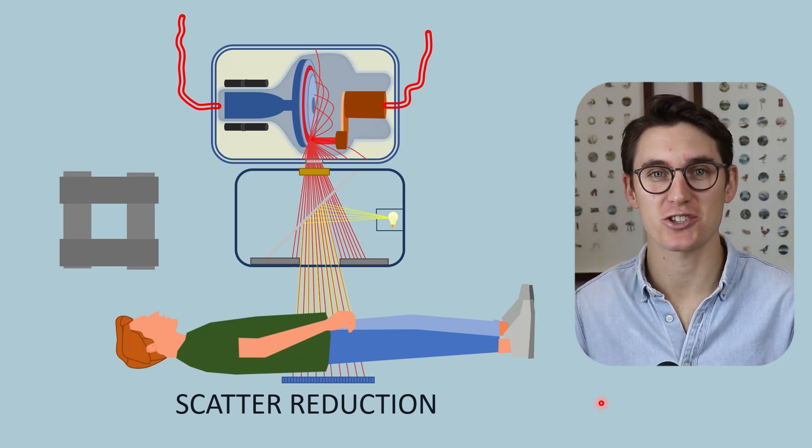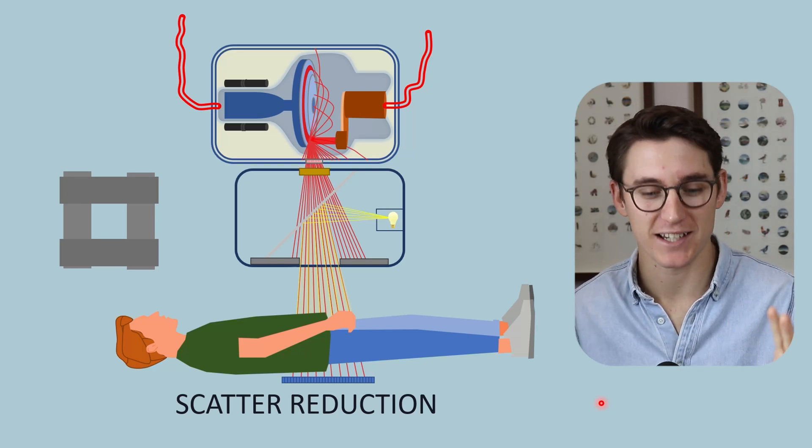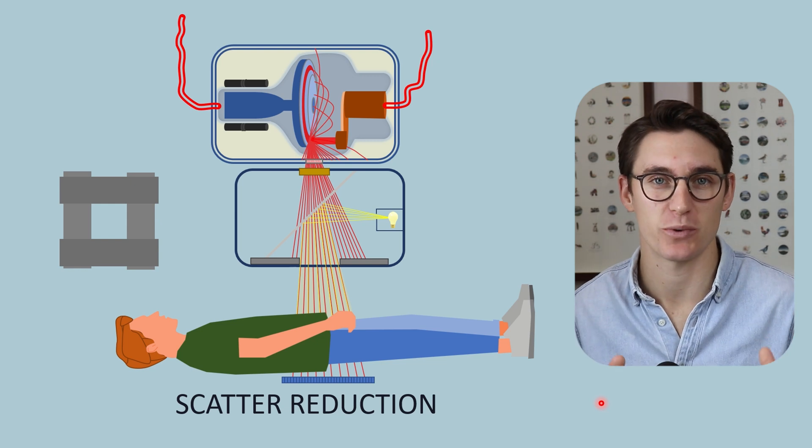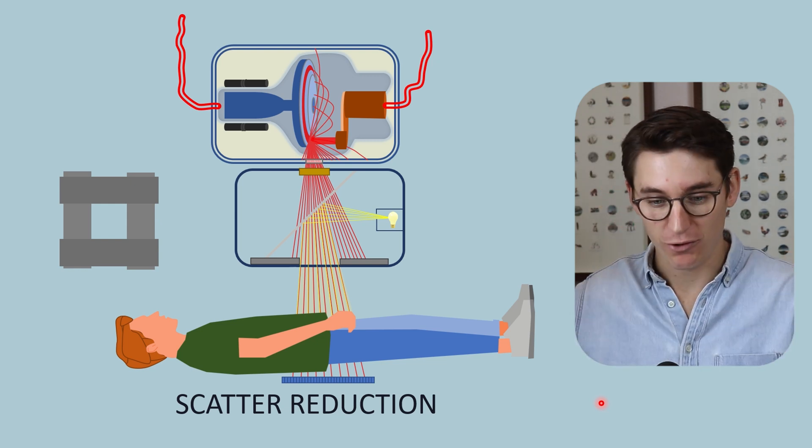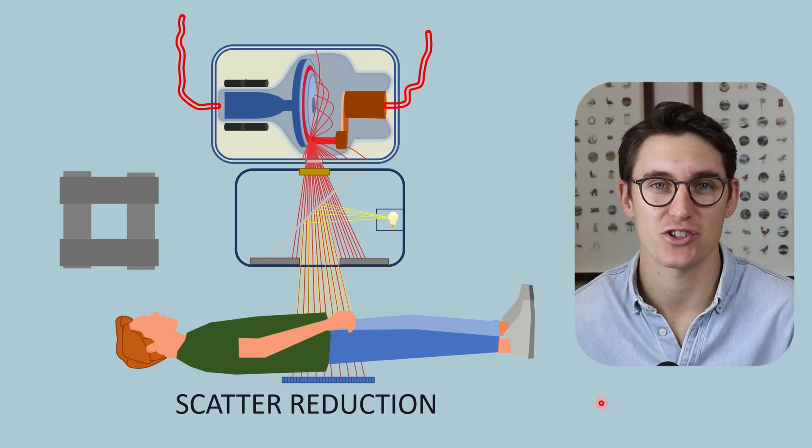Hello and welcome back. Now in our last talk we looked at four different factors that influence the amount of scatter within our image: the tissue density, the tissue thickness, our field size, and the x-ray energy.